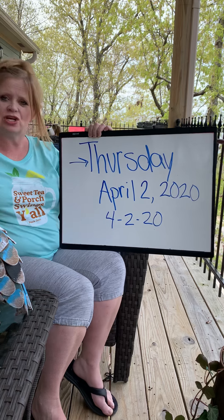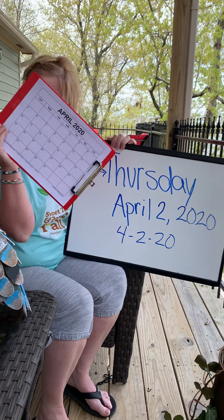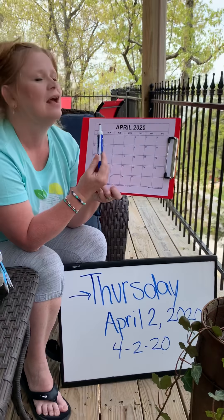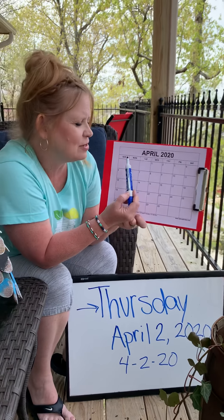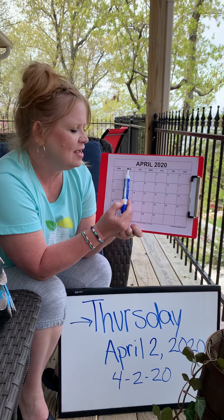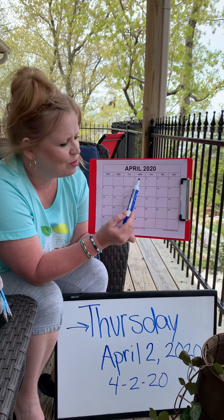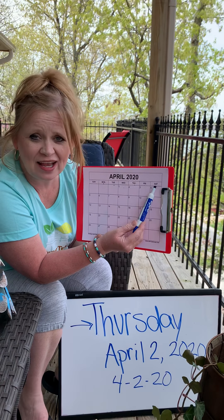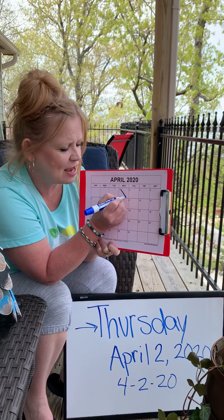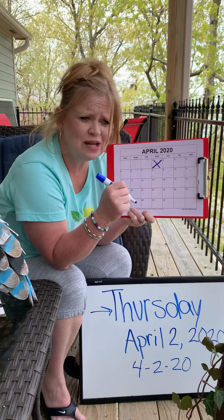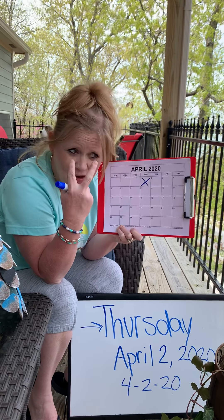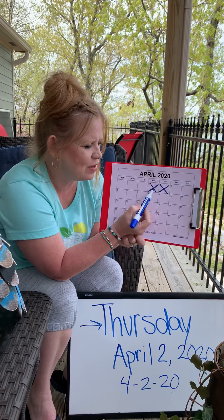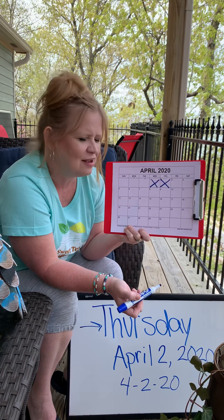Just like we do in class, sometimes we forget to fill out our big calendar, don't we? So we're going to do that today. Everybody has the April calendar. Let's say the days of the week together, just like we do in class: Sunday, Monday, Tuesday, Wednesday, Thursday, Friday, Saturday. So yesterday, Wednesday was April 1st, so we can cross that one out. And which one do we cross out for today? April 2nd. So we have April 1st and April 2nd crossed out.